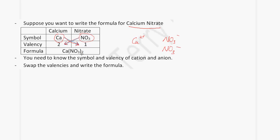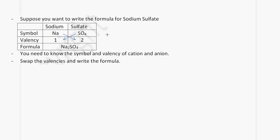Suppose you want to write the formula for sodium sulfate. Write the symbols: sodium is Na, sulfate is SO4. Sodium has a valency of 1 and sulfate has a valency of 2. We swap the valencies and write it as Na2SO4. You can also think of it as: sodium is Na+ and sulfate is SO4 2−, so you need 2 sodium ions to combine with one sulfate ion, giving Na2SO4.